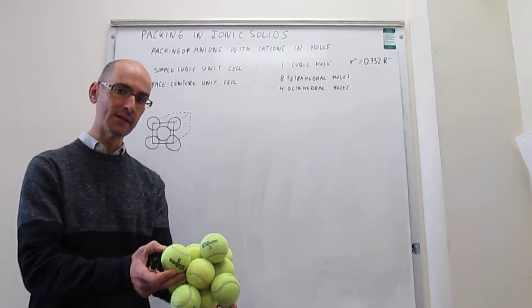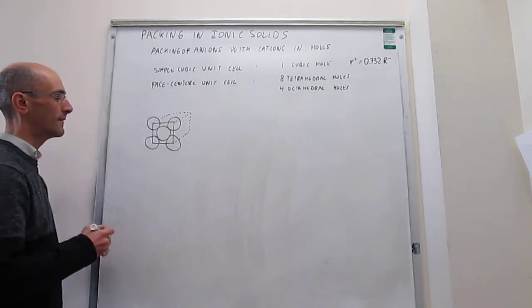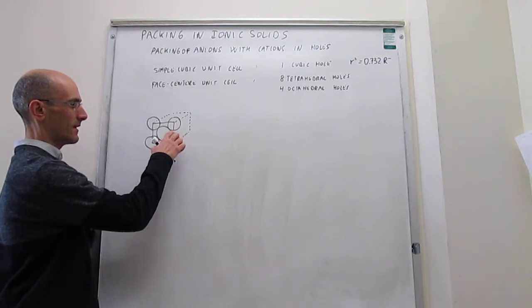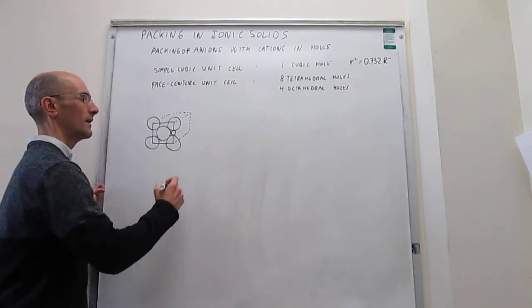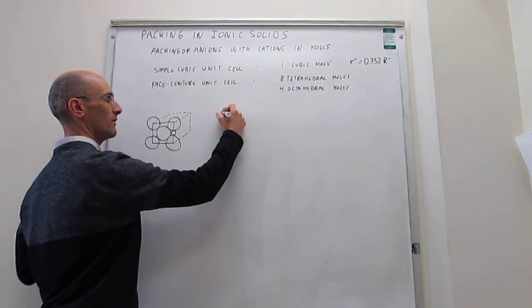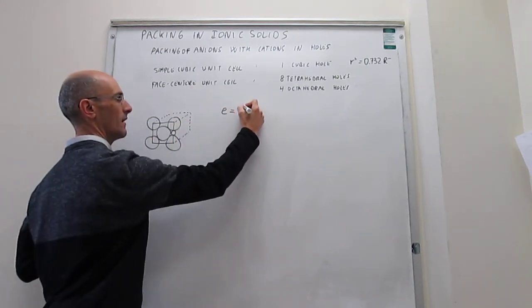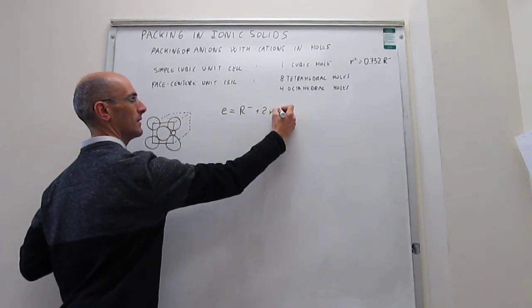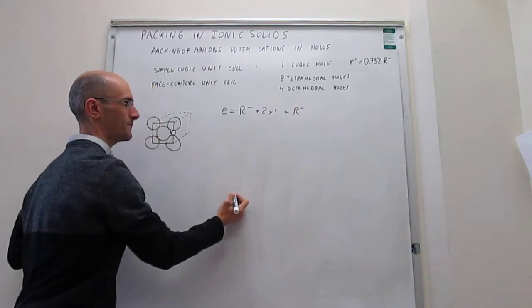I'm going to move away from this physical model into this representation. What we actually have is that the cations are fitting right in between these two anions at the edge. So right here, that is your cation. Then we have that this edge of the cube is going to be equal to the radius of one anion R-, then twice the radius of the cation 2R+, and then another radius of that anion R-.